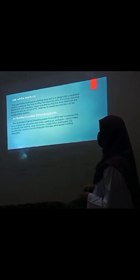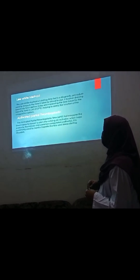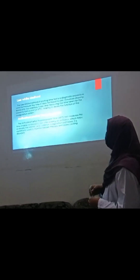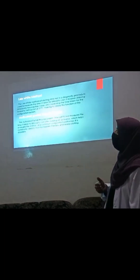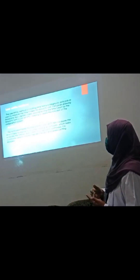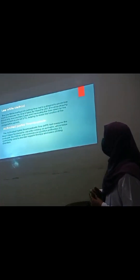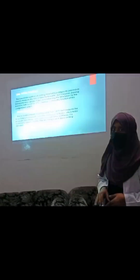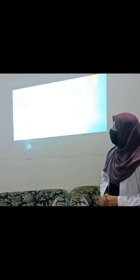The Wright method of Clotting Time is a diagnostic procedure used to measure the time it takes for blood to clot. It involves drawing blood into two capillary tubes and measuring the time taken for blood to form a clot at 37 degrees centigrade, in order to assess the function of the coagulation system.